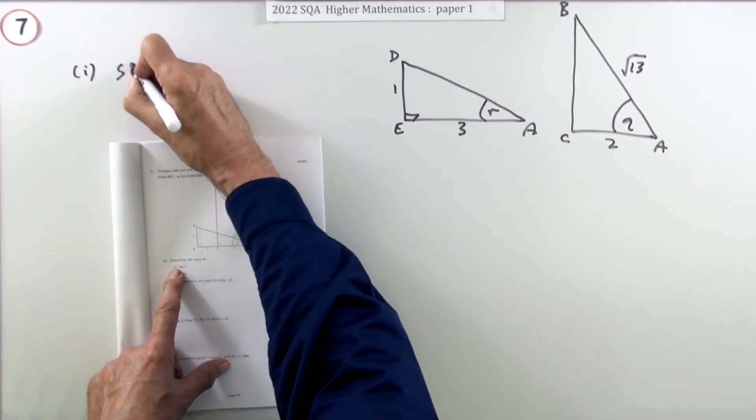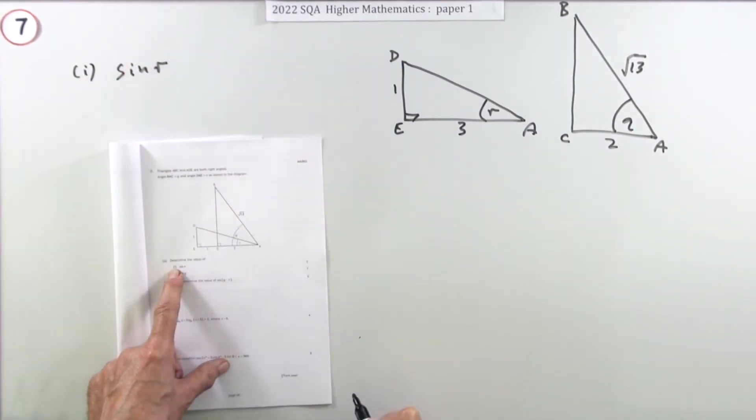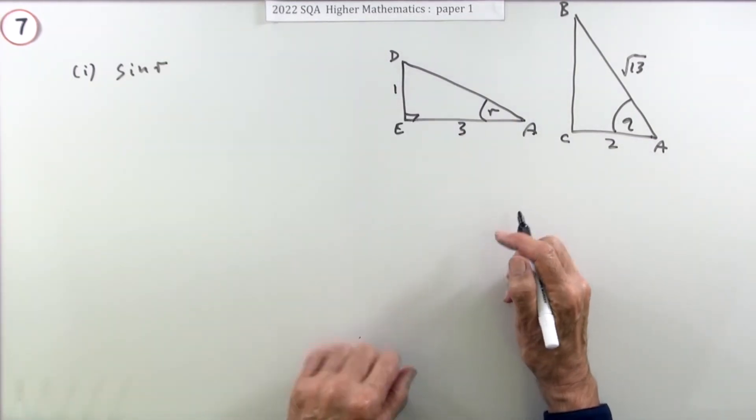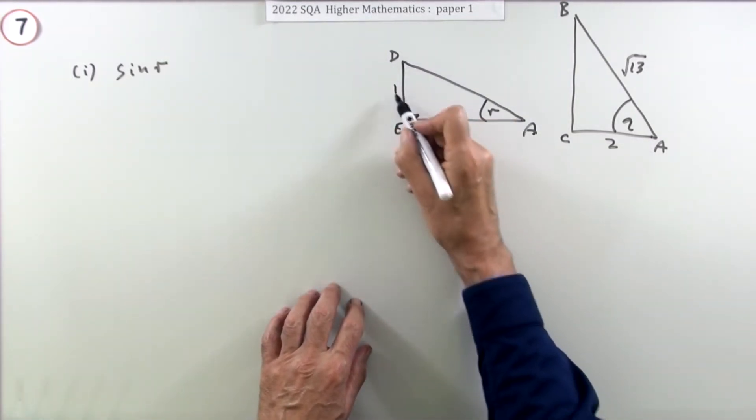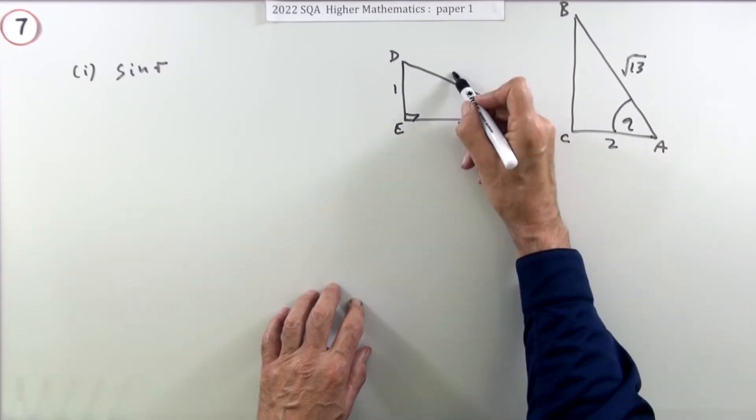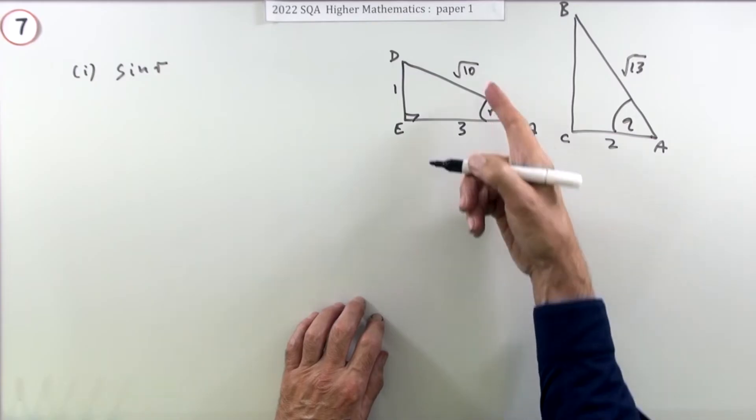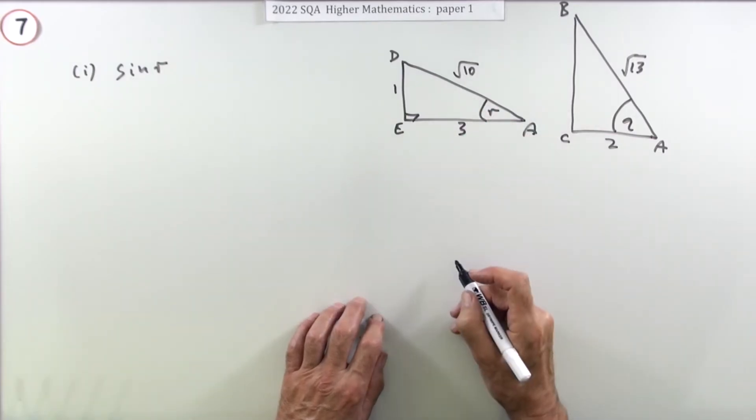First of all, what's sine of R? To get the sine I need the hypotenuse. Well, 1 and 3, 1 squared and 3 squared is 10, so that's root 10. You could put down the working if you like, but I think it's enough just to put it into the diagram there.